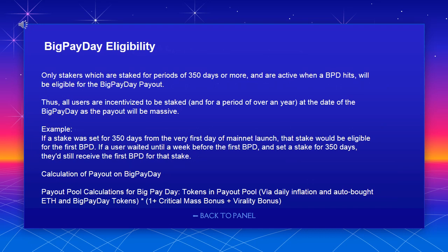Big Pay Day eligibility: only stakers who are staked for periods of 350 days or more, and are active when a BPD hits, will be eligible for the Big Pay Day payout. Thus, all users are incentivized to be staked for a period of over a year at the date of their Big Pay Day, as the payout will be massive. Example: if a stake was set for 350 days from the very first day of mainnet launch, that stake would be eligible for the first BPD. If a user waited until a week before the first BPD and set a stake for 350 days, they'd still receive the first BPD for that stake.